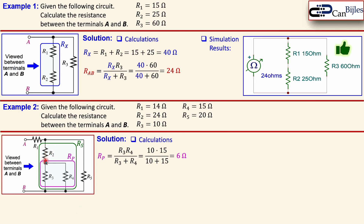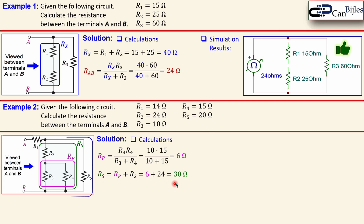This Rp of 6 ohms is in series with R2, forming a new combined value called Rs. Rs = Rp plus R2 = 6 plus 24 = 30 ohms.